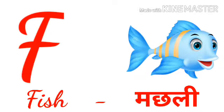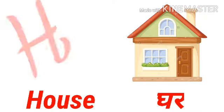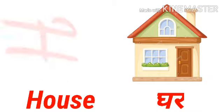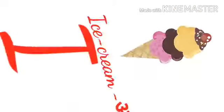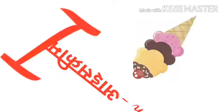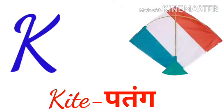F for fish, fish means machli. G for goat, goat means bakri. H for house, house means gar. I for ice cream, ice cream means ice cream. J for jug, jug means surah.